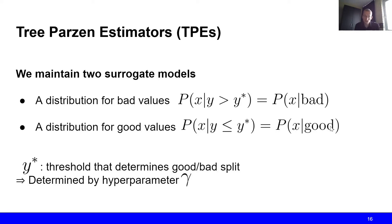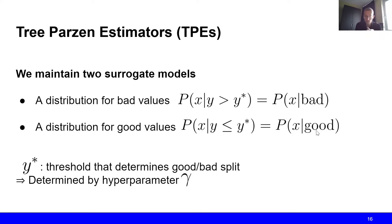Note that this threshold y-star is determined by a hyperparameter gamma. For example, suppose that we have 100 different observations and gamma is set to 0.5. This means that we take the best 50% of our observations to fit the good distribution, and use the remaining 50% for the bad distribution. This is how the hyperparameter gamma influences TPE.